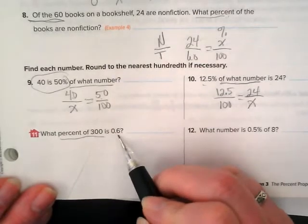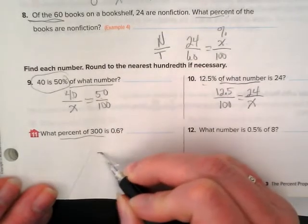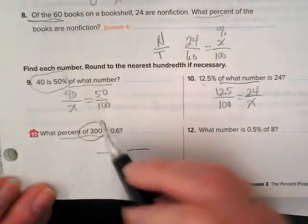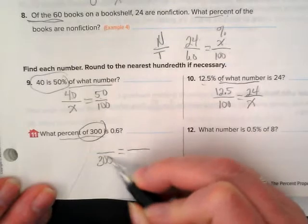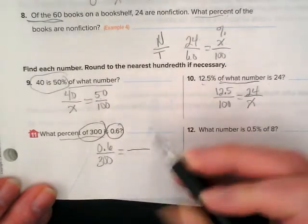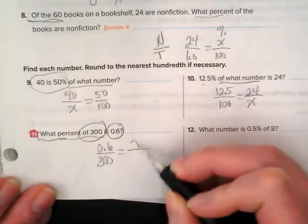Of the 60 books on a bookshelf, 24 are non-fiction. What percent of the books are non-fiction? The question then is what percent. So we know in our percent ratio, we don't know what the part is, but because it's a percent ratio, we know the whole is always 100.